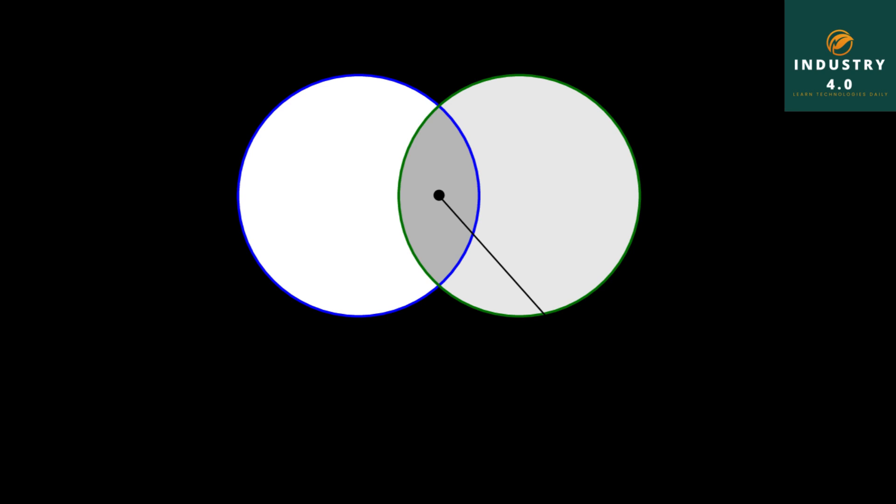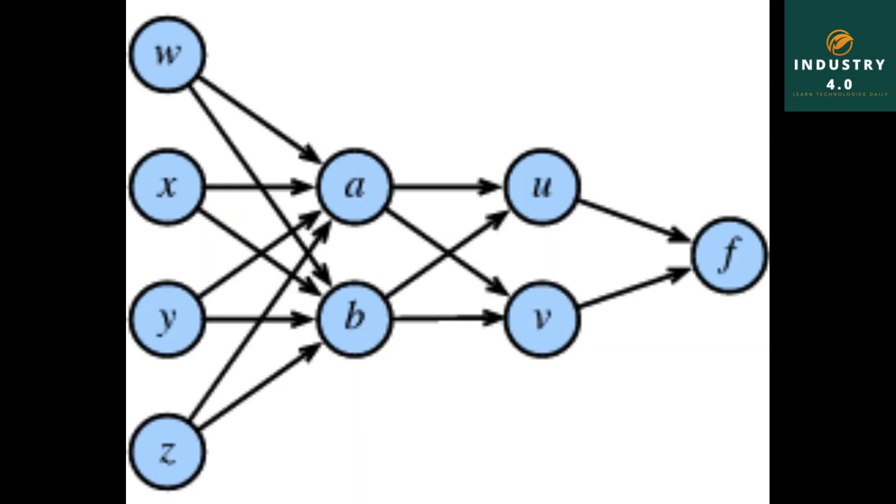What is the chain rule in machine learning? The chain rule, or general product rule, calculates any component of the joint distribution of a set of random variables using only conditional probabilities. This probability theory is used as a foundation for backpropagation and in creating Bayesian networks.